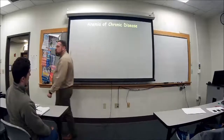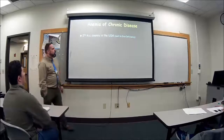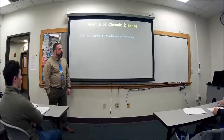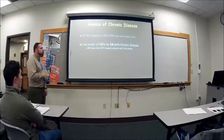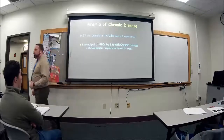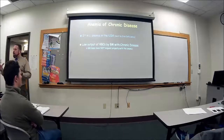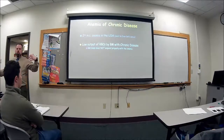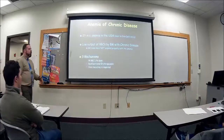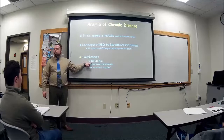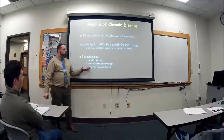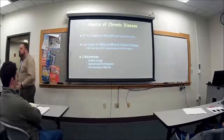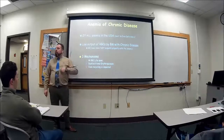Let's talk about anemia of chronic disease. This is the second most common anemia in the United States, next to iron deficiency. It's a low output of red blood cells by the bone marrow associated with some sort of chronic disease, where the bone marrow mass does not expand properly. There are three mechanisms: the lifespan of red blood cells decreases — instead of 120 days, now they only last 70 days — impaired red blood cell synthesis, or impaired recycling of iron.